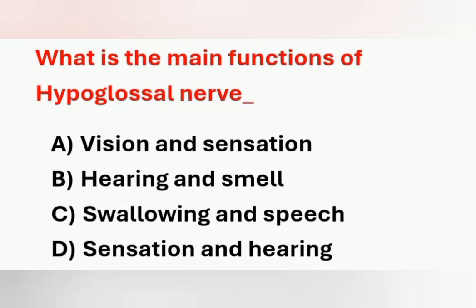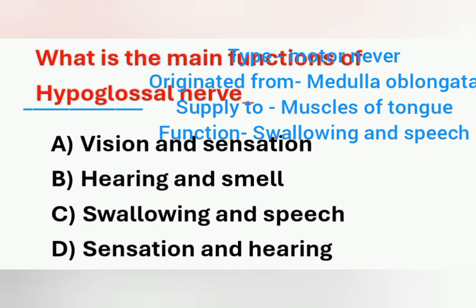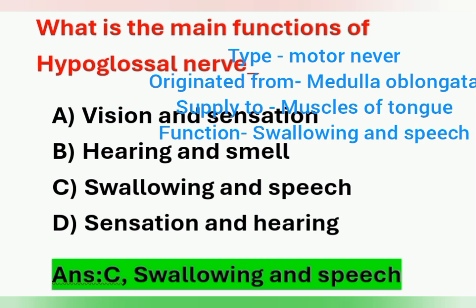Next question: what is the main function of the hypoglossal nerve? Options: A) Vision and sensation, B) Hearing and smell, C) Swallowing and speech, D) Sensation and hearing. There are 12 pairs of cranial nerves; the hypoglossal nerve is the 12th cranial nerve. It is a motor nerve originating from the medulla oblongata, supplying the muscles of the tongue. Its main function is swallowing and speech — option C is the correct answer.